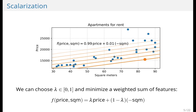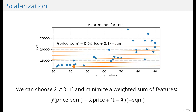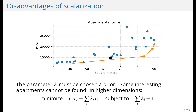One technique that we could apply is scalarization. We compute a weighted sum of these features — square meters and price — we add a negative sign in front of square meters, and we minimize this function. If we choose lambda equals 0.99 and we minimize, we find this apartment shown in the bottom right corner in orange. We could change lambda to 0.9 and we'd find a different apartment. This is an okay approach, but it has some disadvantages. The parameter lambda must be chosen beforehand.